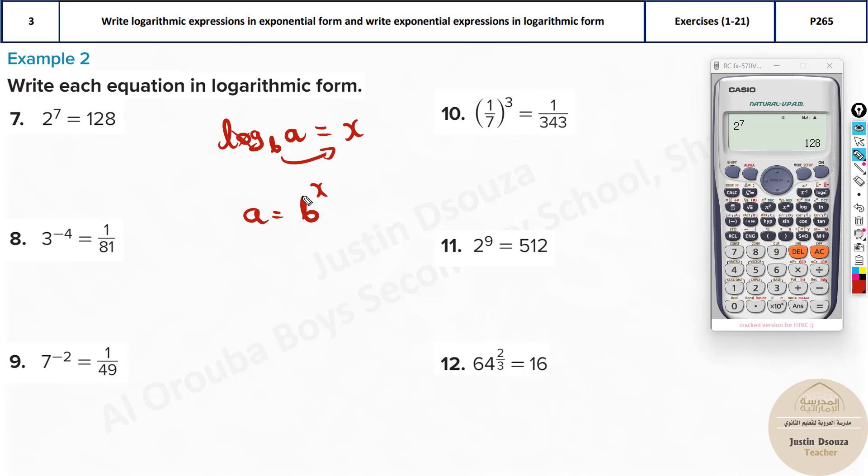This base goes back. So, the base of the exponential will become the log base, that is equal to, and this comes down, that is X. So, we are getting the same question. You get it? So, now, over here, what happens? This base moves to the other side. 7 comes down, base moves to the other side, becomes the base of log. So, 7 equals log base 2, 128.